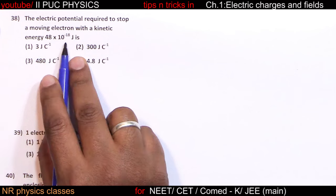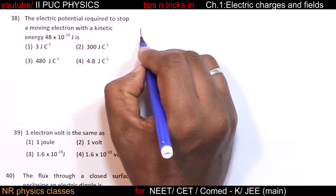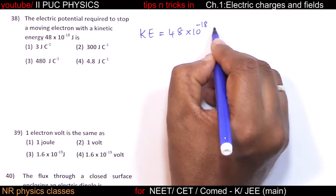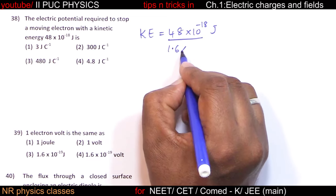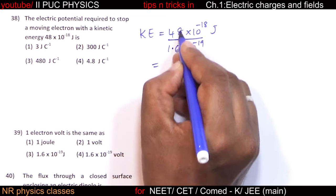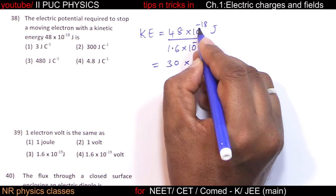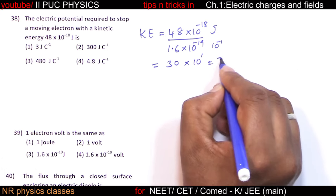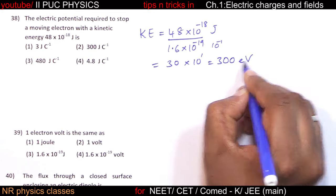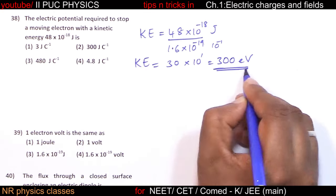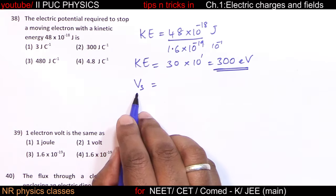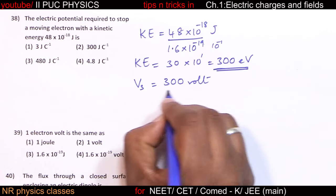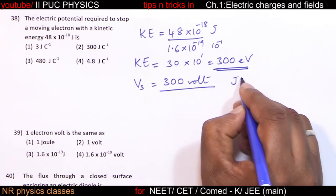The electric potential required to stop a moving electron: kinetic energy is 48 × 10⁻¹⁸ joule. Dividing by charge of electron (1.6 × 10⁻¹⁹): kinetic energy = 300 eV. Therefore stopping potential is 300 volt, since 1 eV corresponds to 1 volt potential difference.